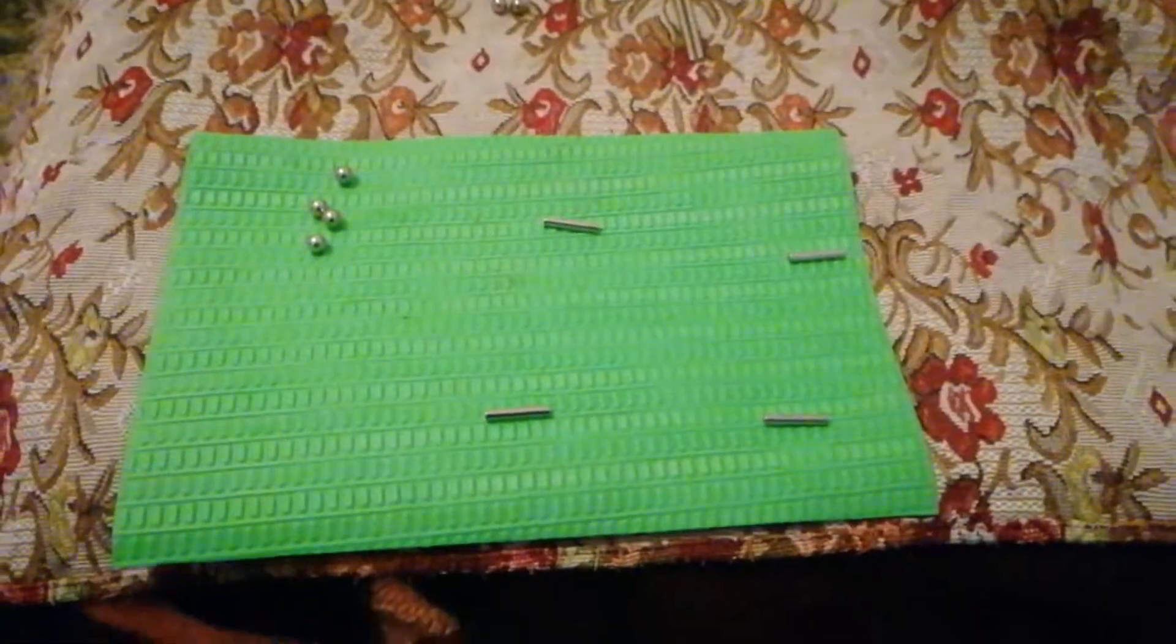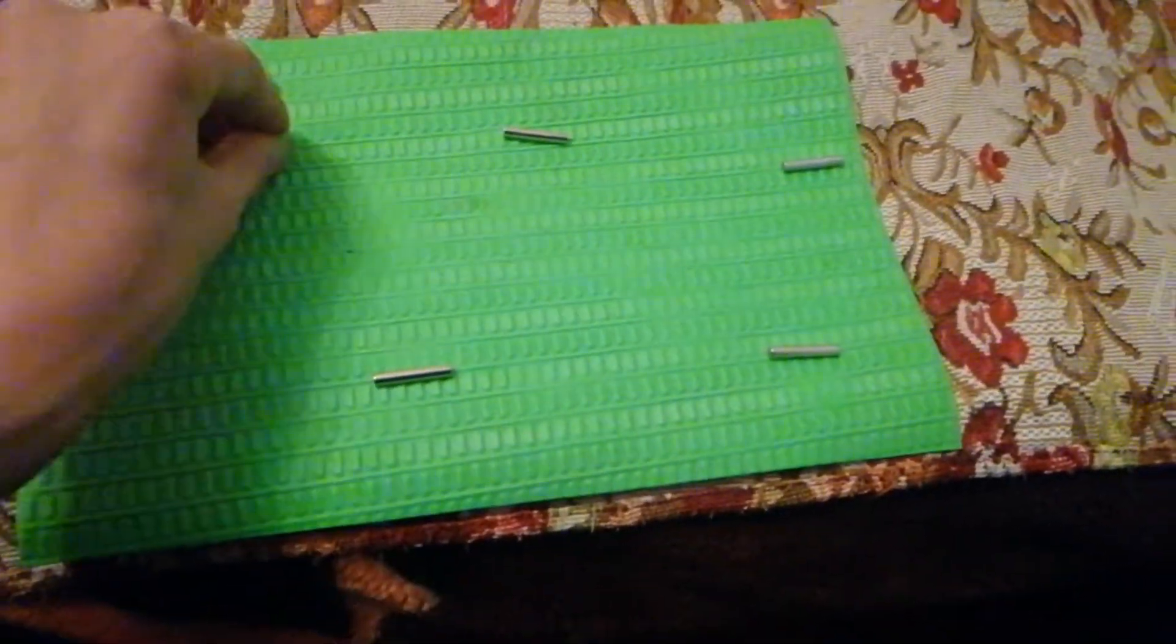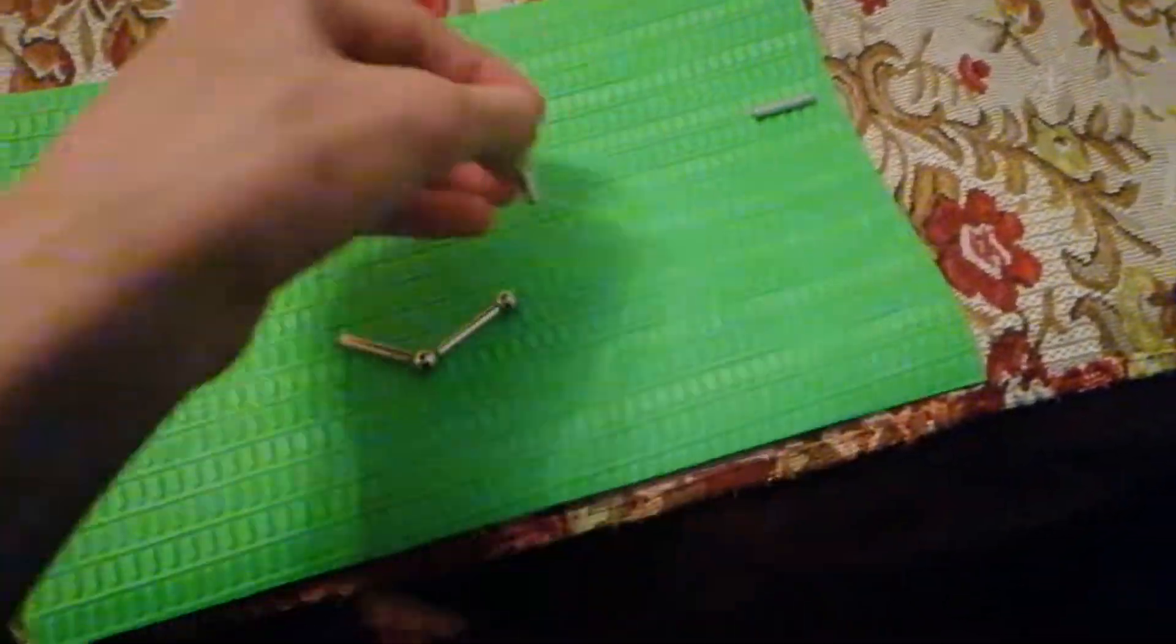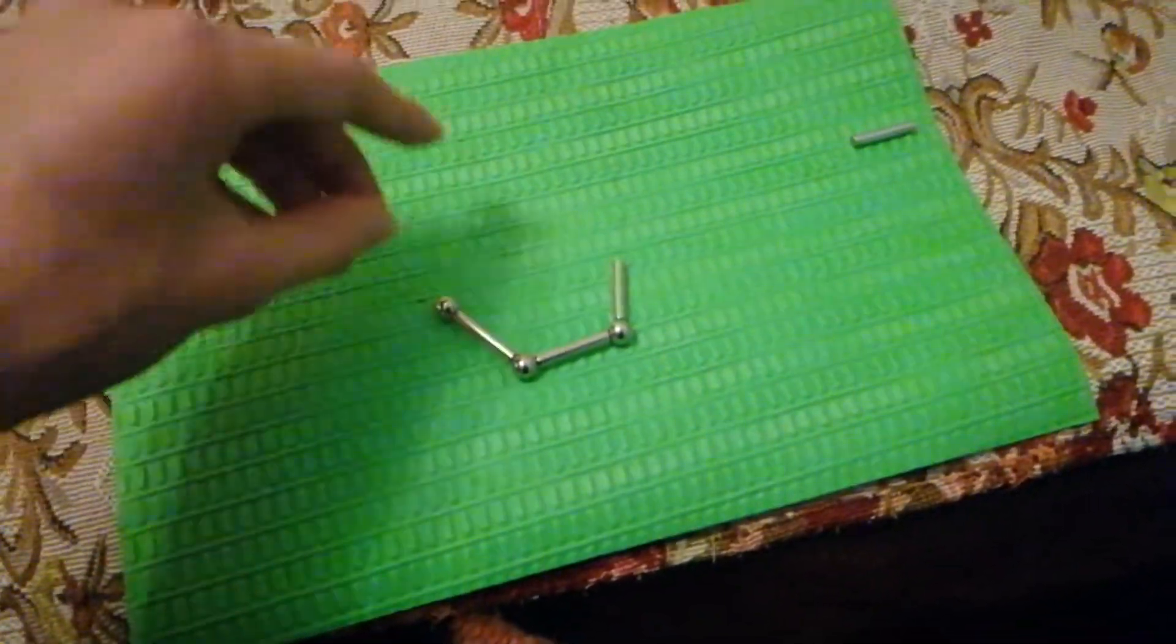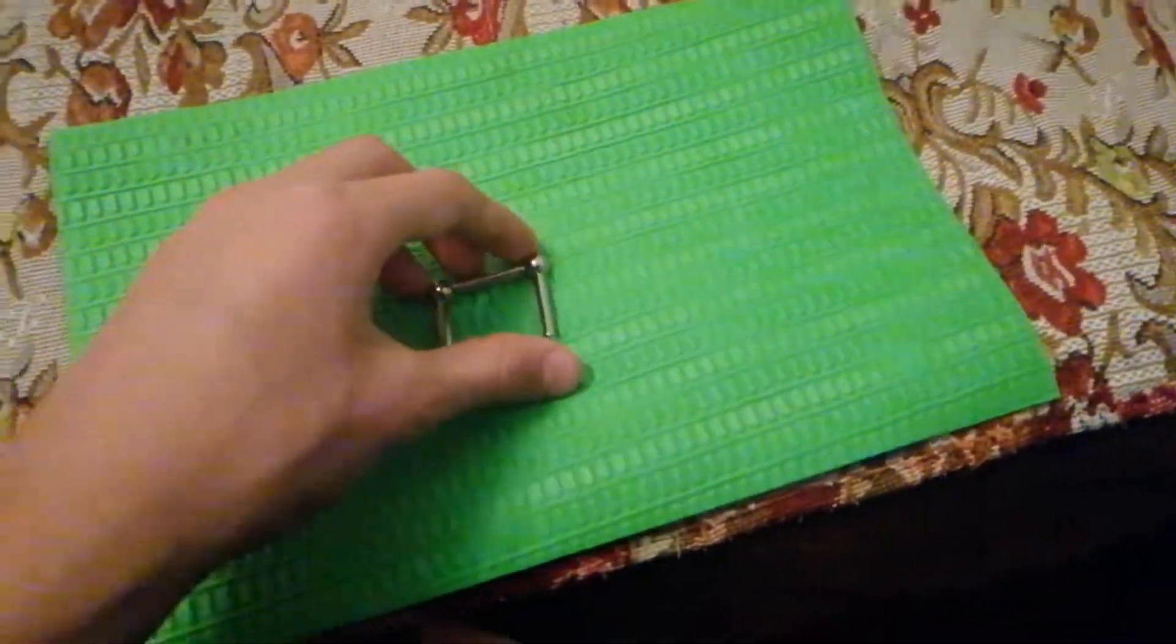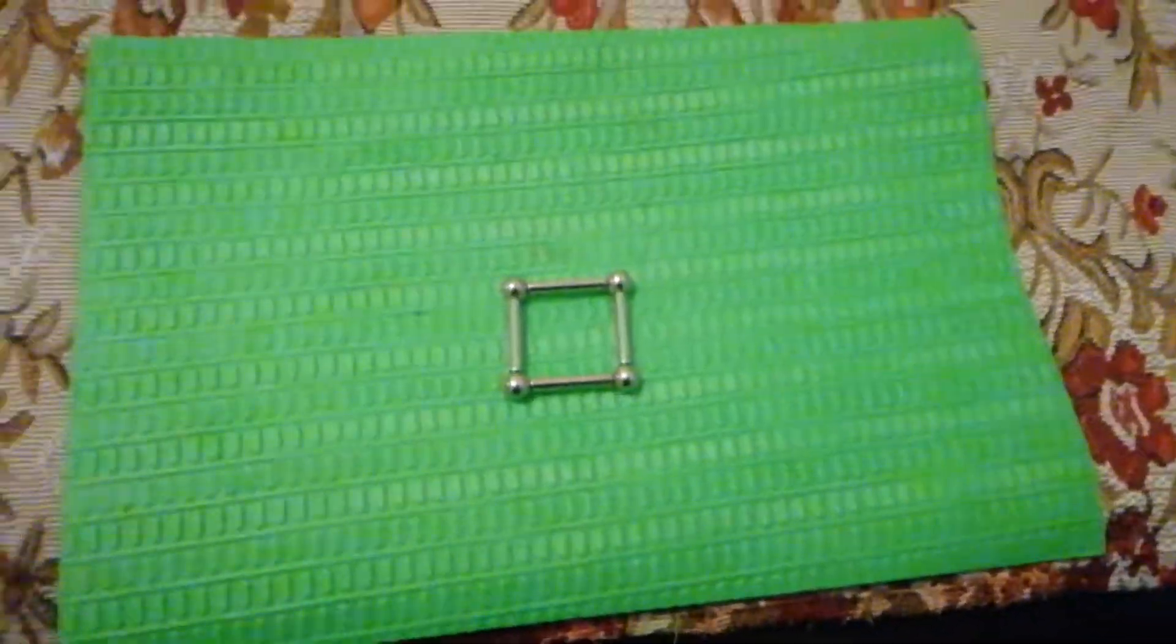Step 1, make a square. First take one rod, then add two beads. Add two rods. Add again two beads, and one more rod to connect. And you have a square. This is pretty easy.